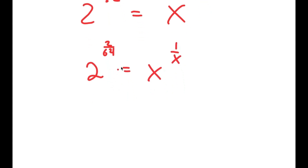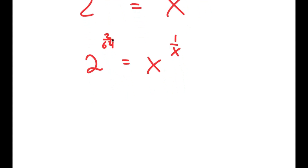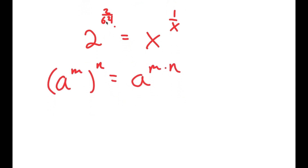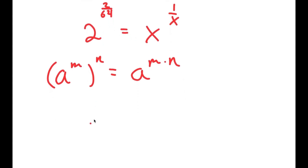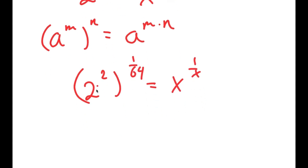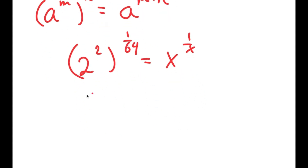Now, remember this is the same thing as: if I have a to the power of n to the power of m, this equals a to the power of m times n. So I can reverse this and rewrite this as 2 to the power of 2 to the power of 1 over 64. And 2 to the power of 2 is 4, so I get 4 to the power of 1 over 64 is equal to x to the power of 1 over x.